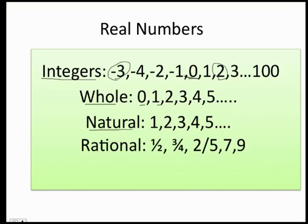Then we have the rational numbers. Rational numbers are numbers that we can put into a fraction, and they can also look like decimals. For example, 1/2 is the same as 0.5; 3/4 is the same as 0.75. Also, the number 7 is a rational number because I can say 7/1, which is a fraction, or 14 divided by 2. Therefore, 7 is an integer, a whole number, a natural number, and also a rational number.